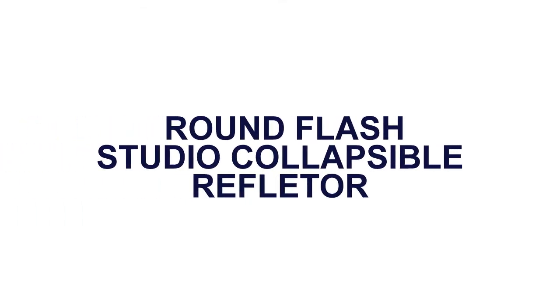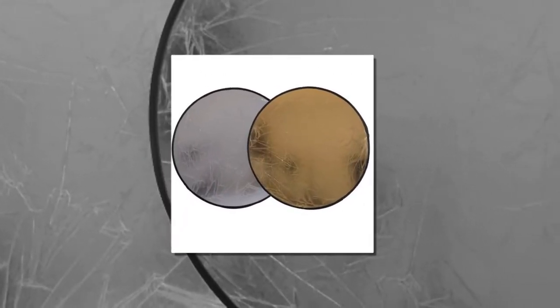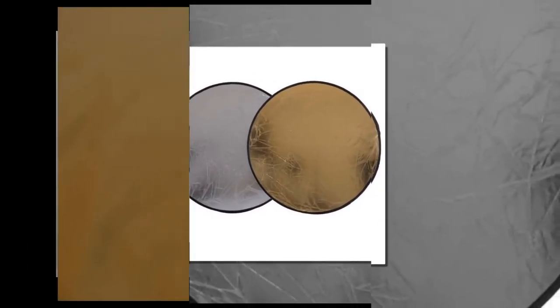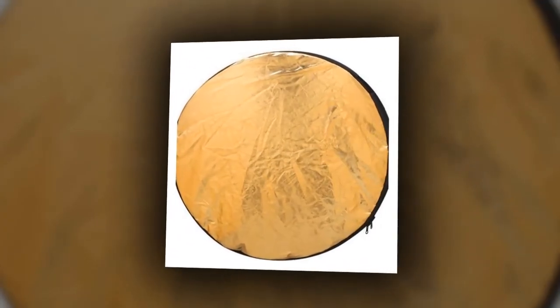Round Flash Studio Collapsible Reflector. Gold creates a warm, summery fill that works great with skin tones near sunrise or sunset.